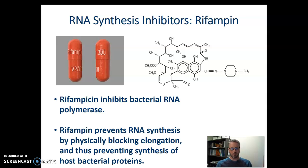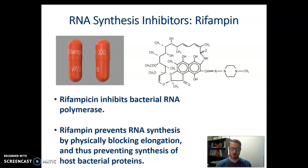If we think more deeply about how rifampin does that, we can think about the structure of the RNA polymerase molecule. The way that rifampin binds, it actually physically blocks the elongation step of transcription. This leads to the loss of the bacteria's ability to make proteins.